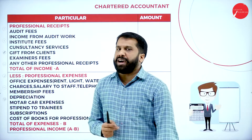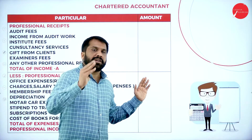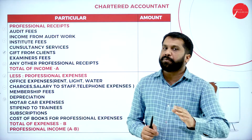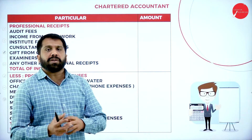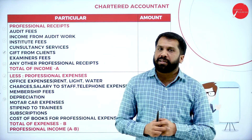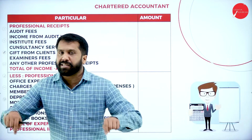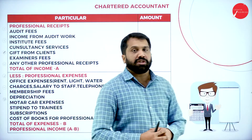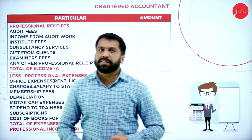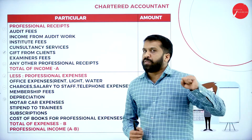To solve problems on the CA profession topic, assume that you are a CA and you have started a new office called X and Y and Co. You are running a chartered accountant office. Whatever income you earn inside the office is called professional income, and whatever expenditures you make are called professional expenses.